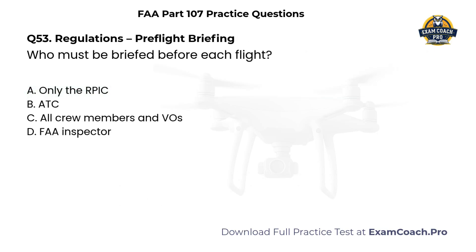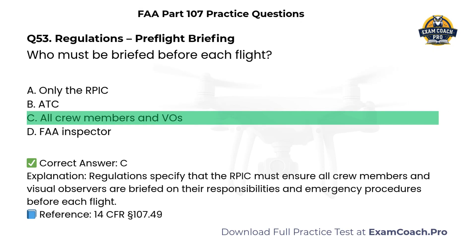Regulations — Pre-Flight Briefing. Who must be briefed before each flight? A. Only the remote PIC. B. ATC. C. All crew members and visual observers. D. FAA inspector. Correct answer: C. Regulations specify that the remote PIC must ensure all crew members and visual observers are briefed on their responsibilities and emergency procedures before each flight.